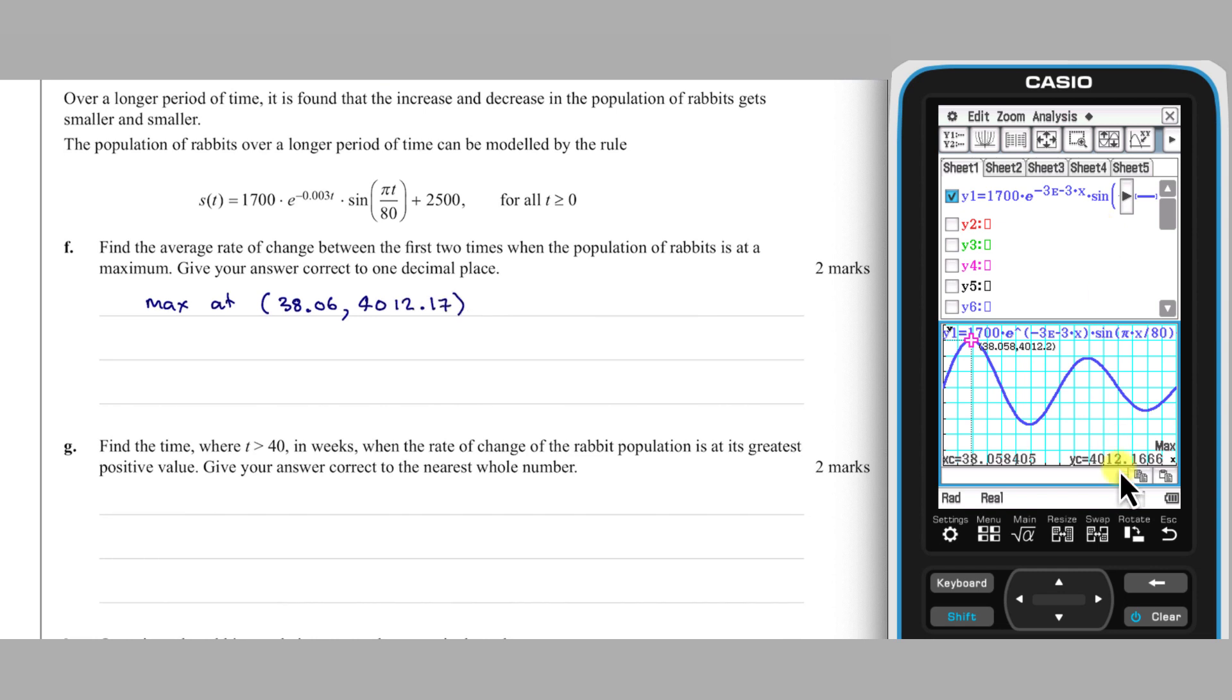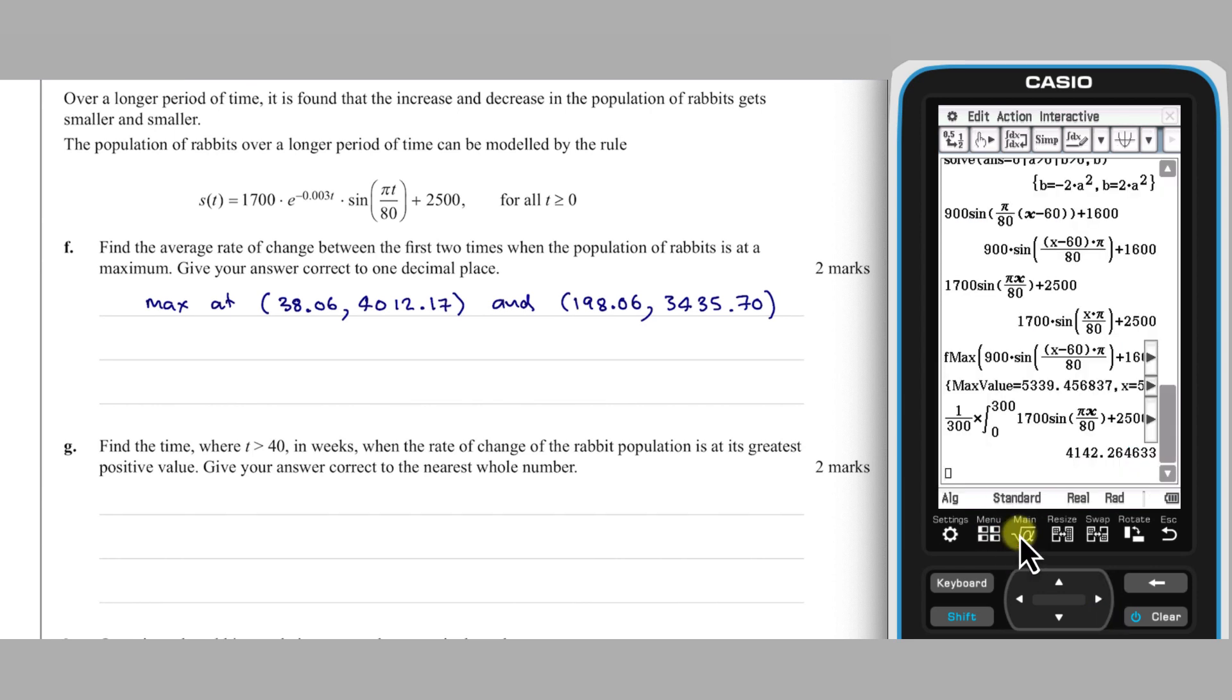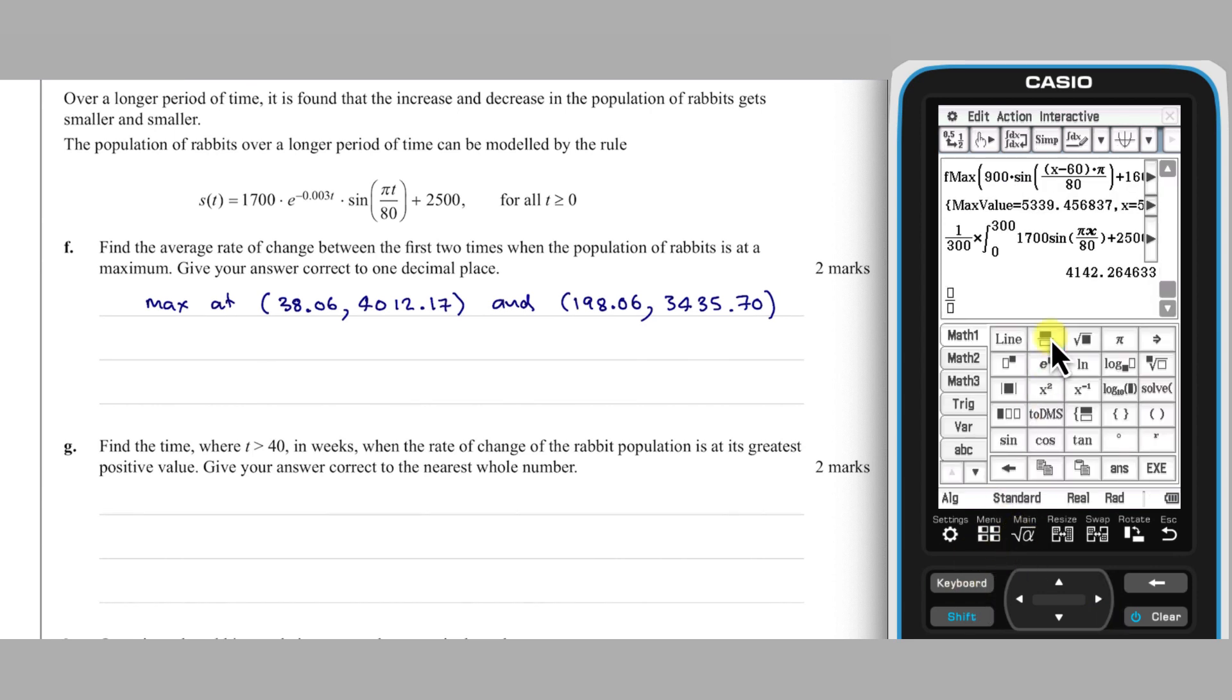To obtain the coordinates of the next local maximum. With this information, the average rate of change between these two points can be calculated in the main app using y2 take y1 over x2 take x1.